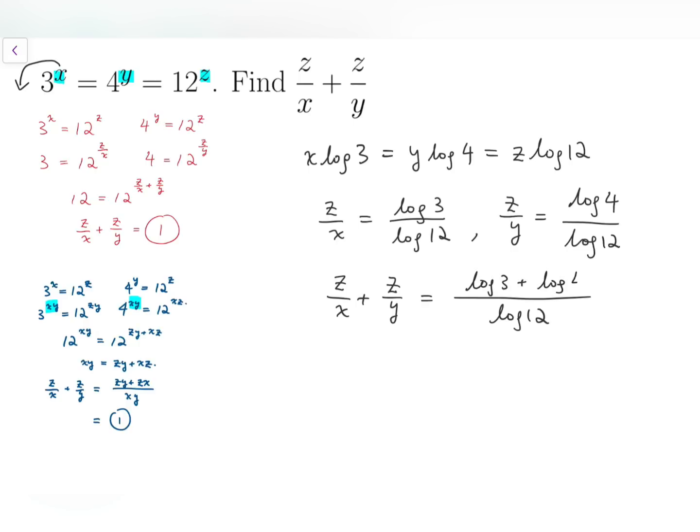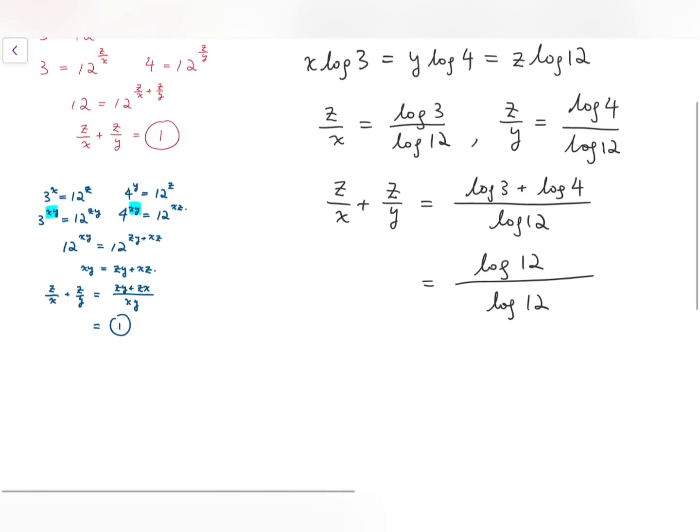While for the numerator, we have log 3 plus log 4. And, since the sum of logarithms is multiplying the numbers inside the logarithms, and then take log all at once, we have log of 3 times 4, which is 12, divided by log 12. And, clearly, it's 1.